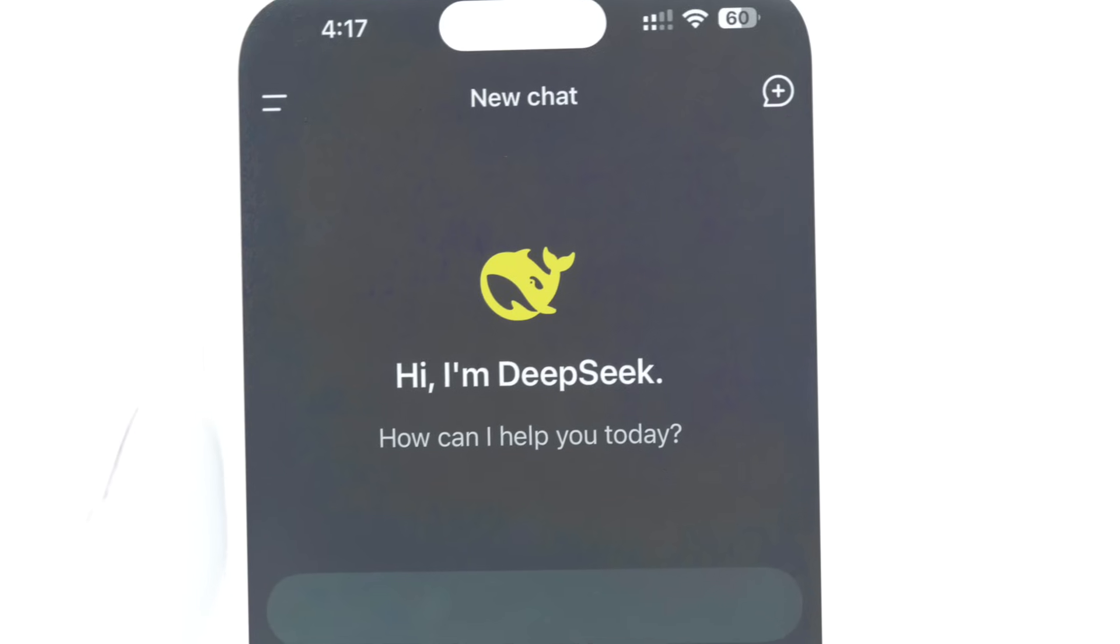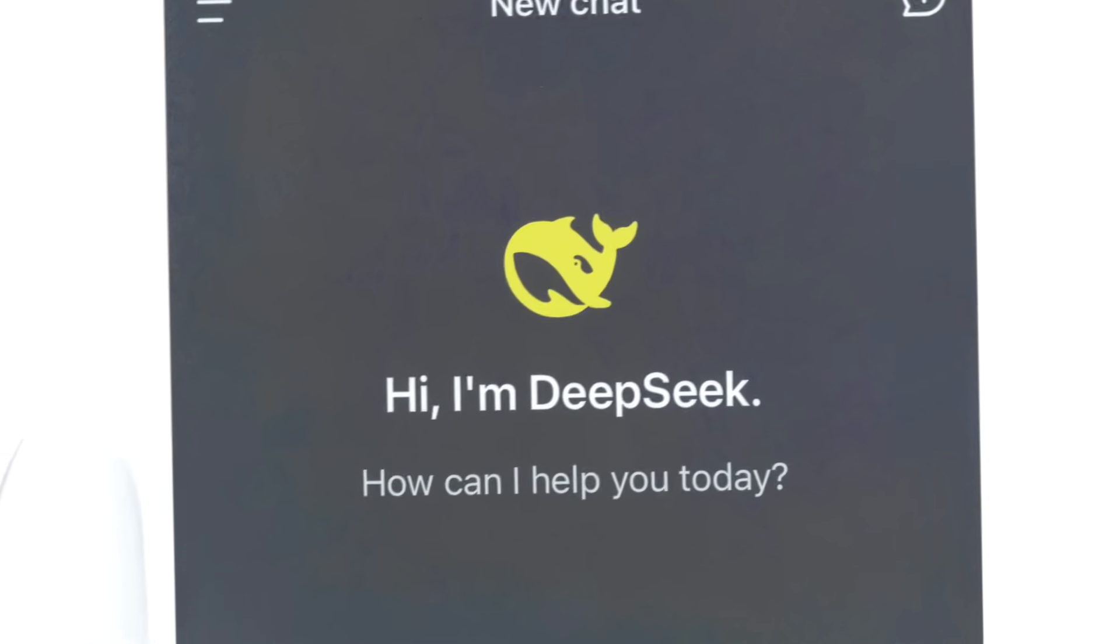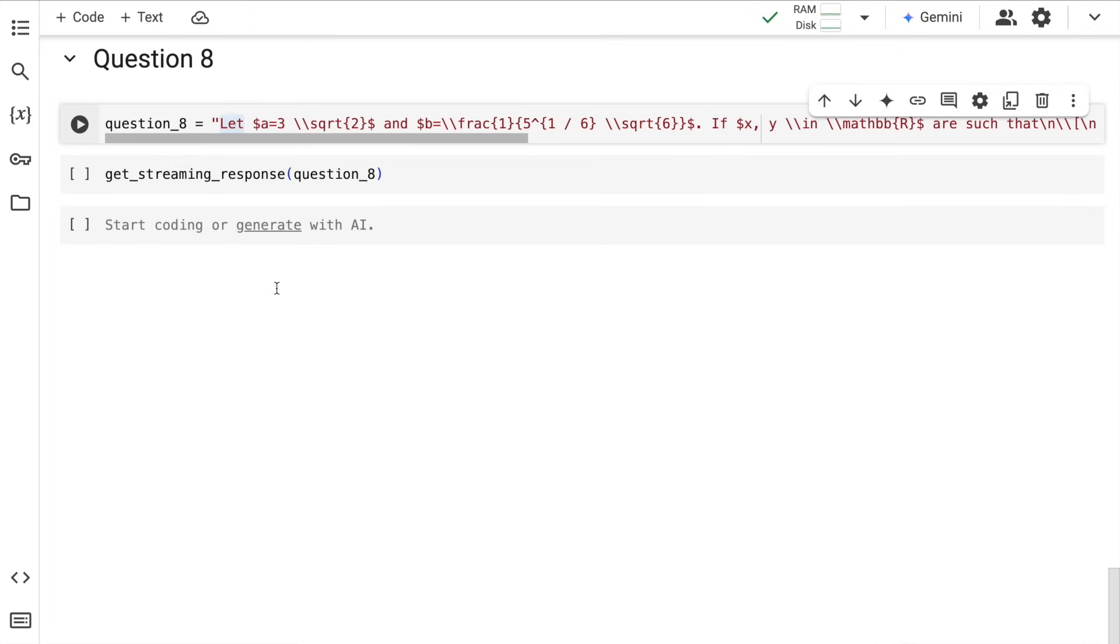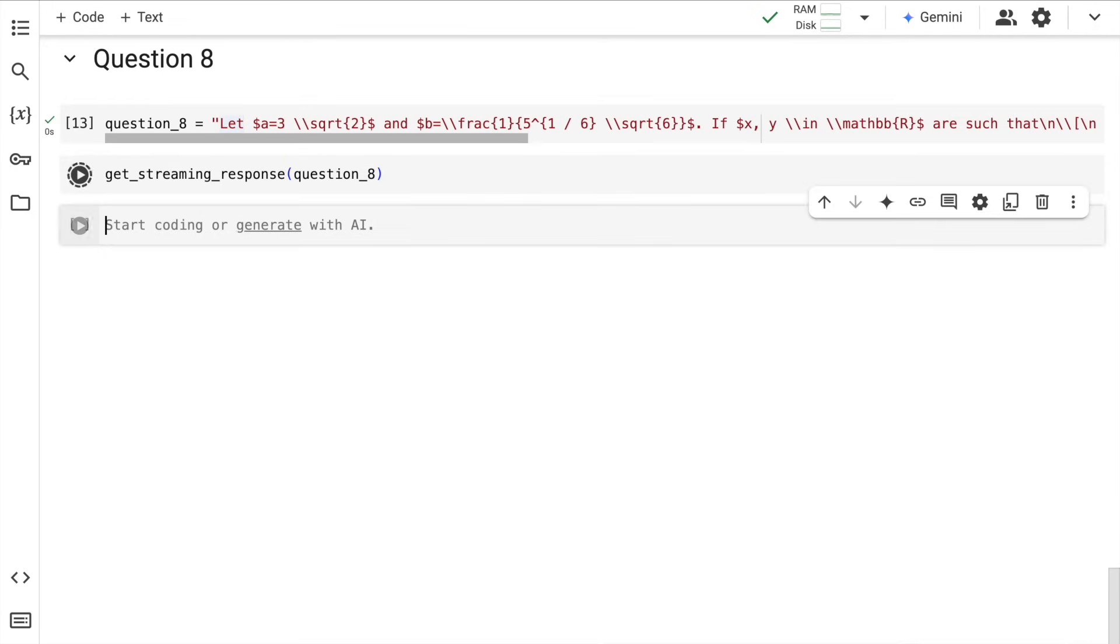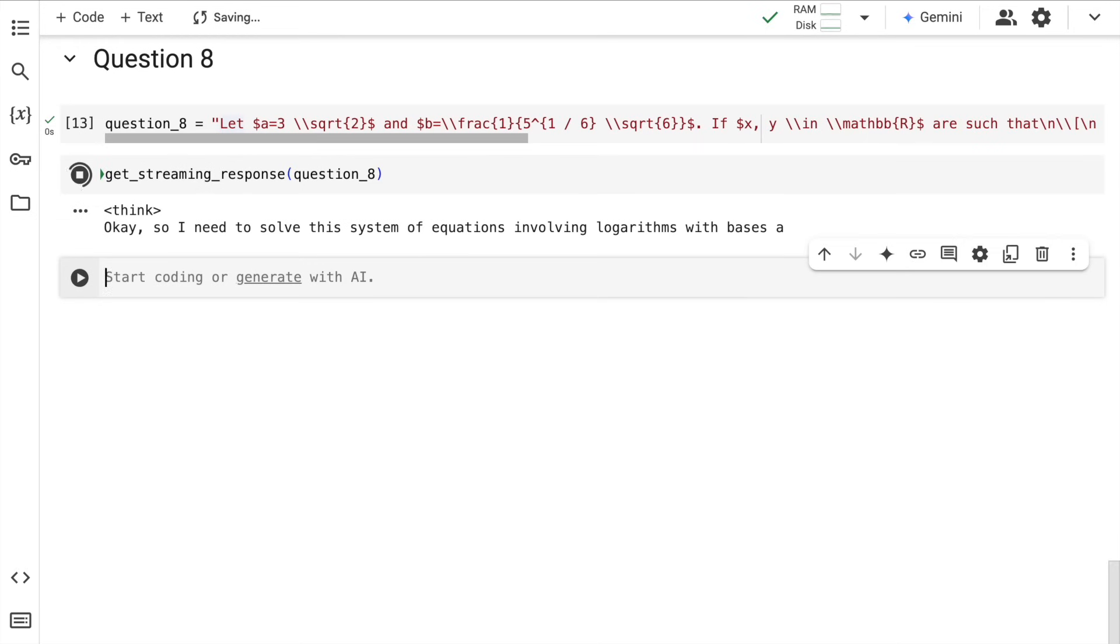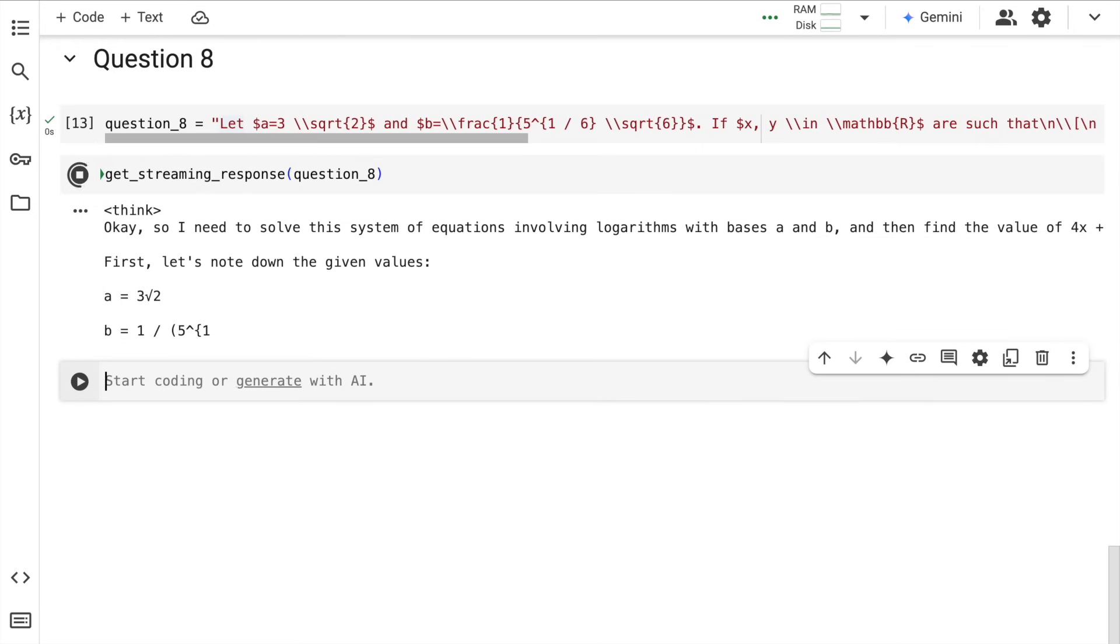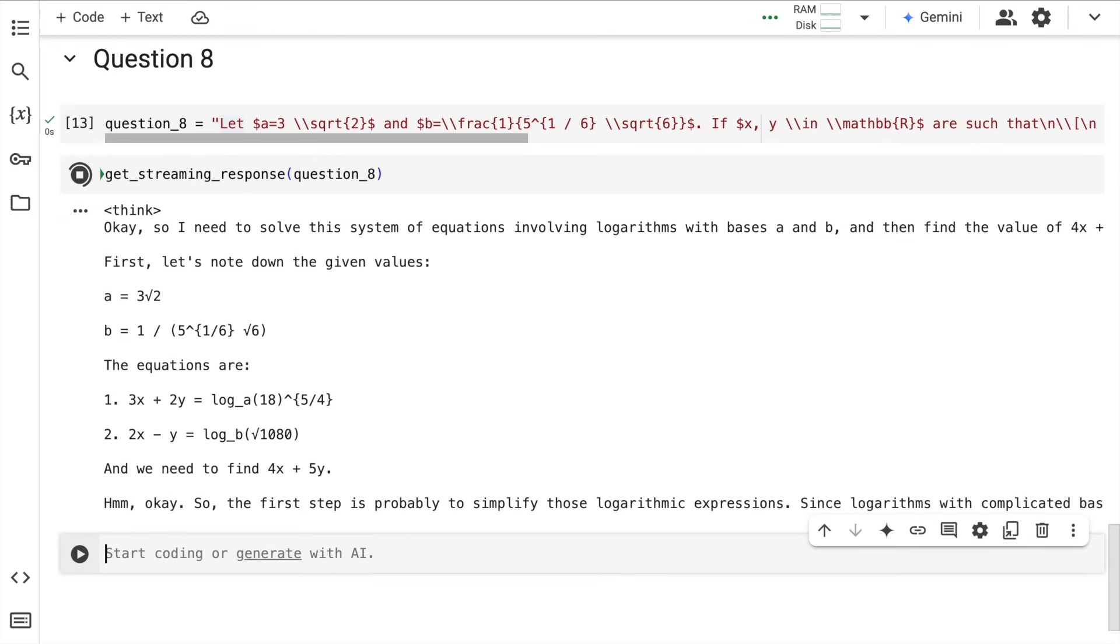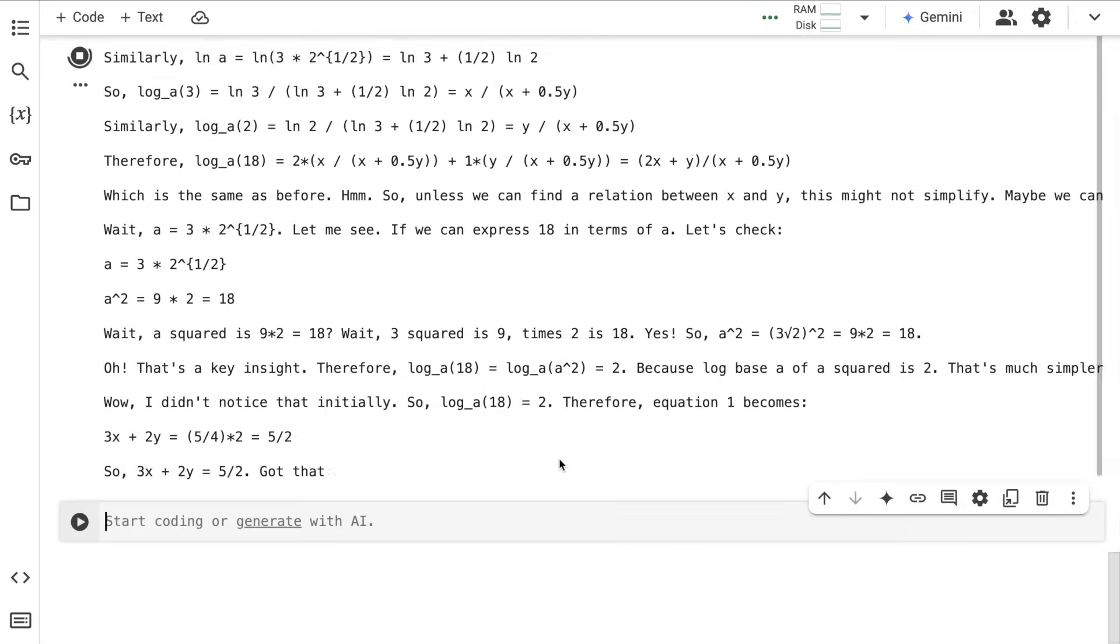So now let's put the DeepSeek R1 model to test again. I pass in this complex question that you see here. This particular question, which looks very daunting, I pass in—again LaTeX converted to this particular variable question_8. Next up, I call the get_streaming_response function. Within a flash of a second, the response starts generating, and the response is ready with us.